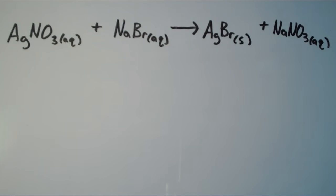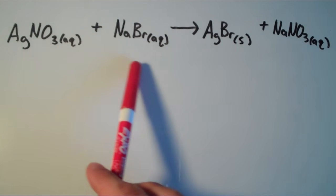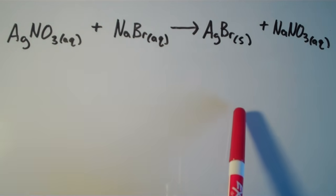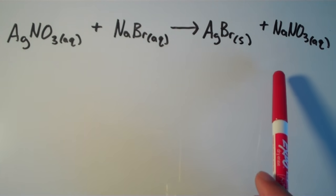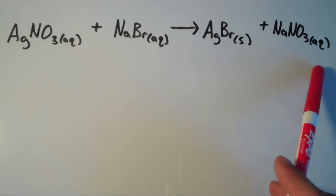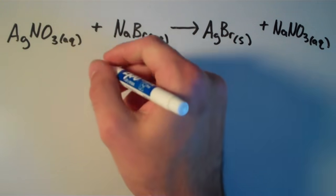In this video I'm going to talk about molecular equations, complete ionic equations, and net ionic equations. Suppose I have the following precipitation reaction: aqueous silver nitrate plus aqueous sodium bromide yields solid silver bromide plus aqueous sodium nitrate. This is what we call a molecular equation.